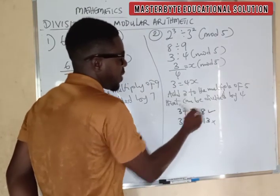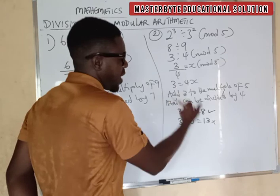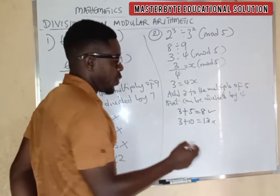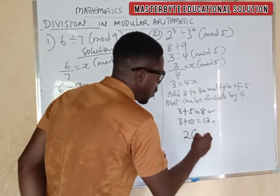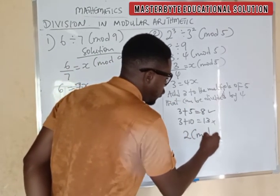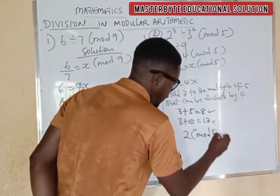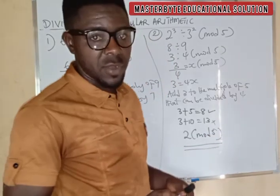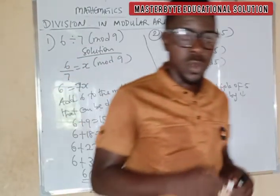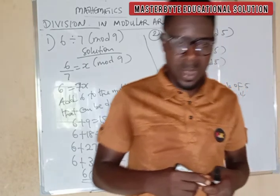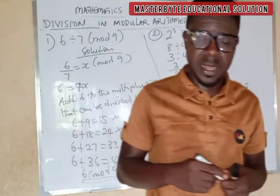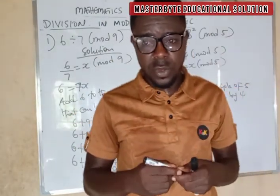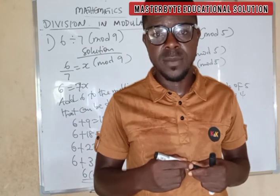Now, 4 divided by 8 gives us 2. So our answer is 2, mod 5, as our final answer. Thank you for listening. Do subscribe to our YouTube channel at Master Byte Education Award Solution, and remain blessed.